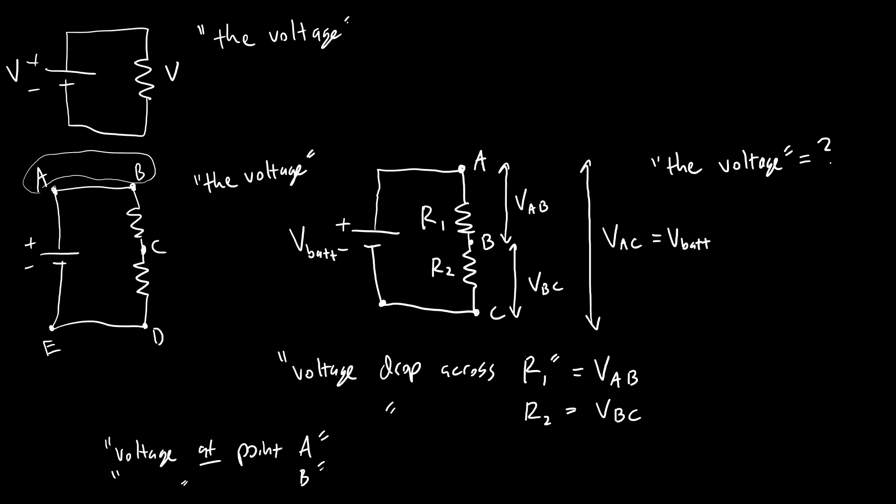We need to do the same thing with voltage. Since it's always between two points, we need to decide which of those points is going to be zero. 99% of the time, in a circuit with a single battery, that point is defined as the negative terminal of the battery.